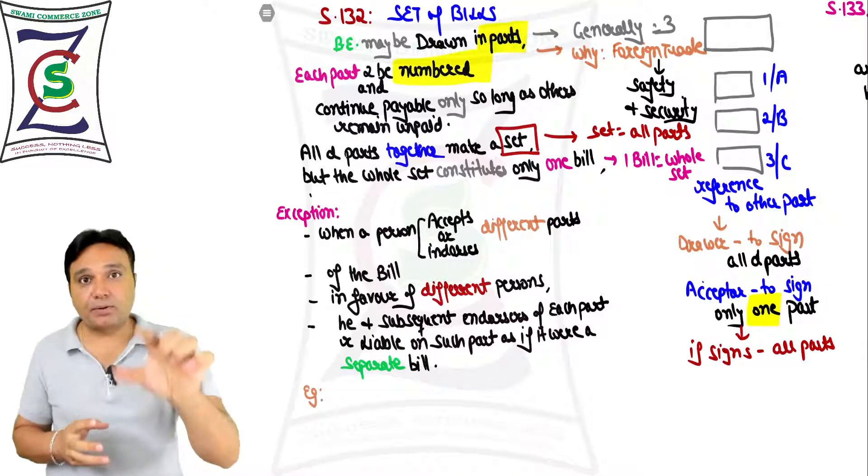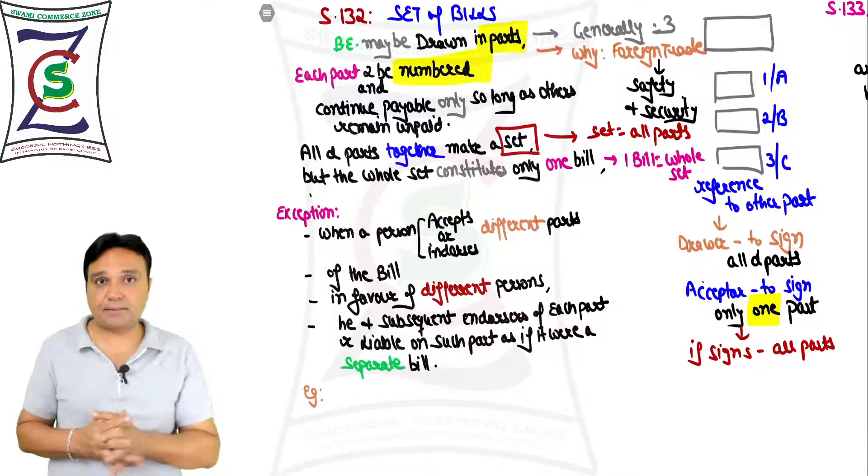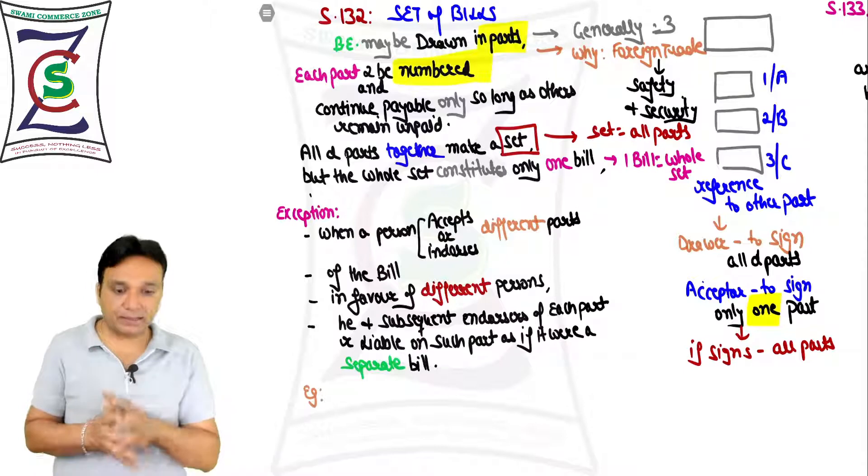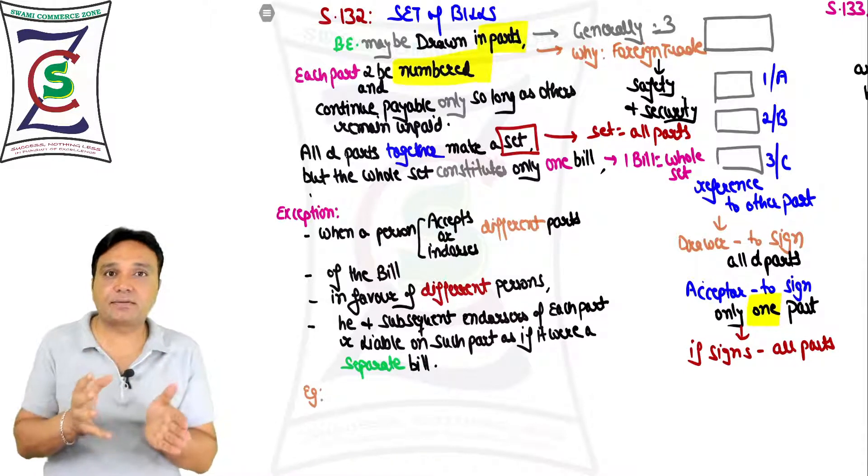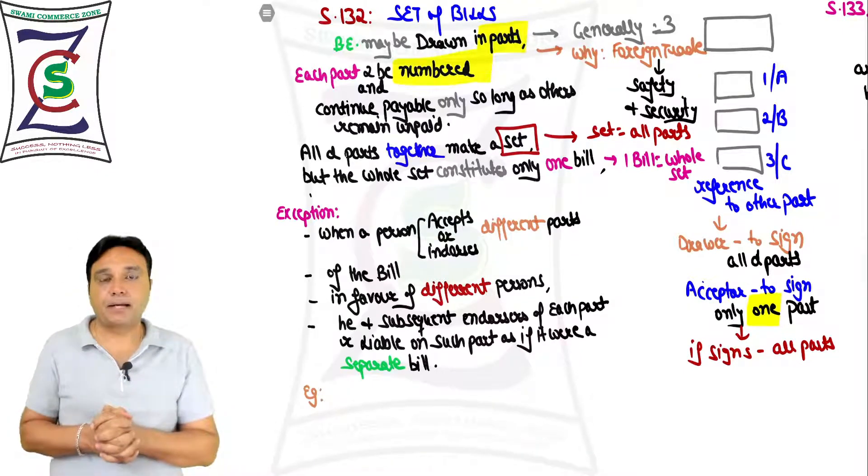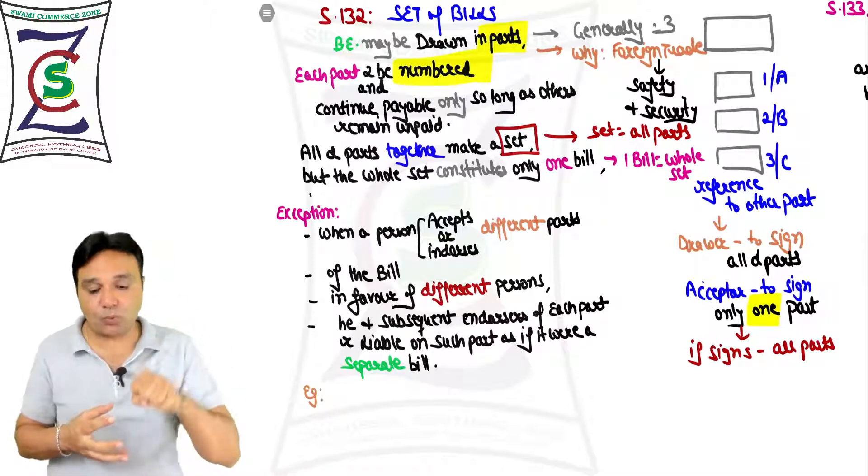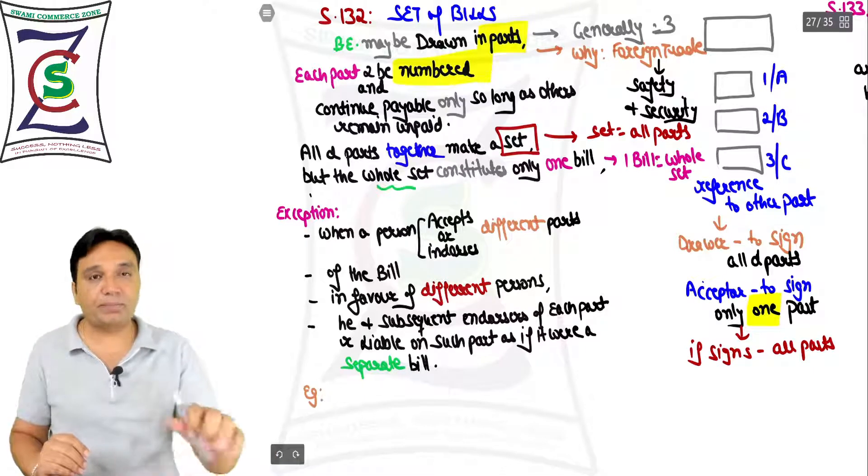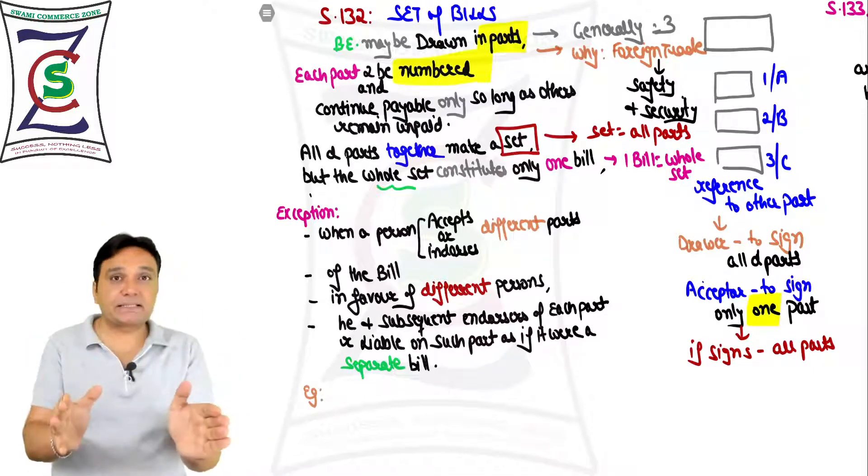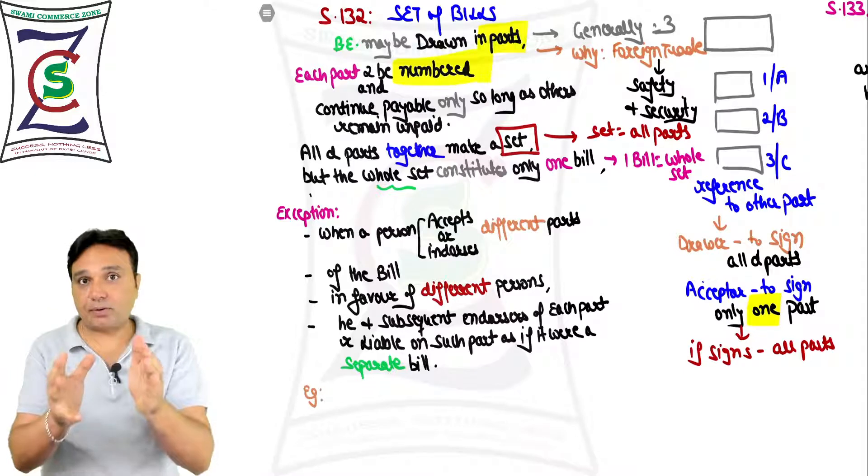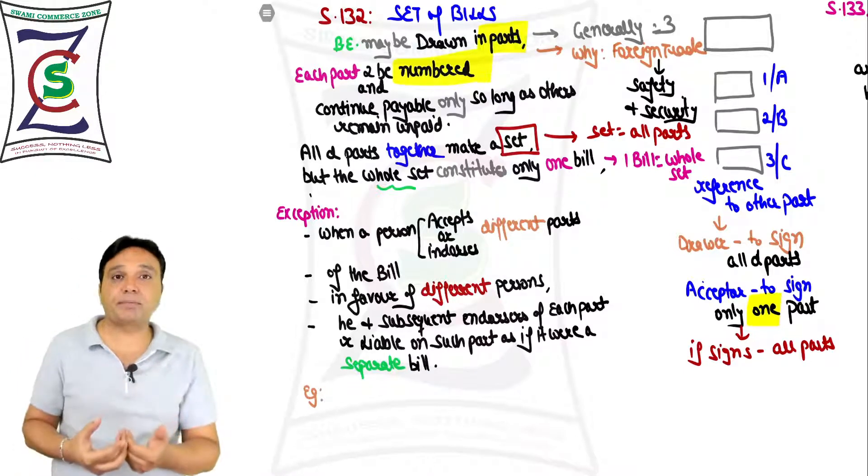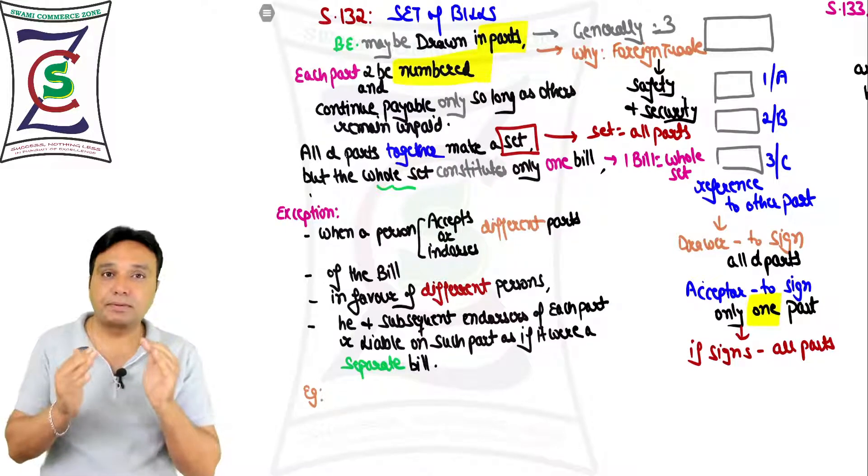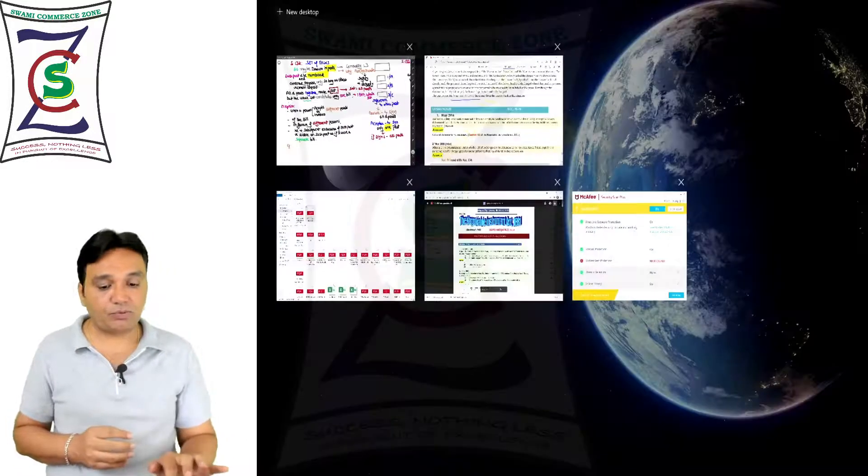Let's say we are calling Mr. Drawee as Mr. A. You accept in favor of Mr. A one part, you sign in favor of A; second, B; third, C - different persons. Here it will be constituted as three different bills. So Section 132 - set of bills - that is, bills drawn in parts, generally three.